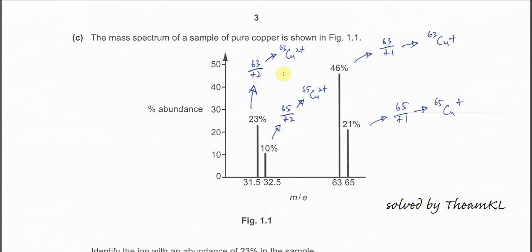Part C, the mass spectrum of the sample of pure copper given this. So the first two peaks 31.5 and 32.5 is actually from the 63 and 65. From here we know that 63 when it's half so you get this. 65 when you get when half you get this. This one you will need to use the mass over charge ratio to get the signals, the 63 and 65.